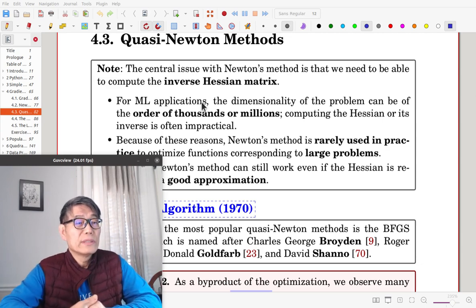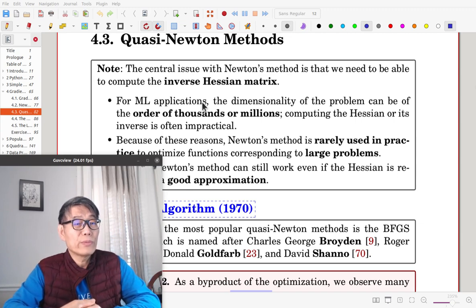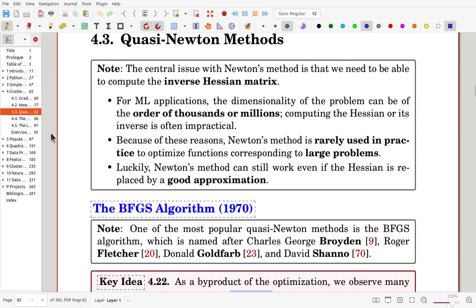Because of these reasons, Newton's method is not well used in practice to optimize large problems. Luckily, Newton's method can still work even if the Hessian is replaced by a good approximation.